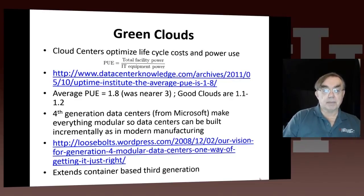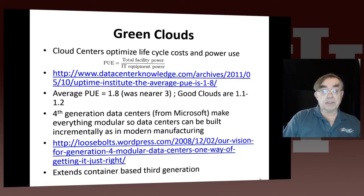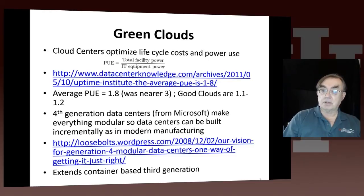Here's some comment on greenness. There is an important metric called the PUE — total facility power over IT equipment power. If it were one, all your power would go into computing and storing data. But if the PUE was 1.8, which was the average a couple of years ago, then 40% of power is wasted. Clouds are much more efficient — they only waste about 10 to 20% of power, with a PUE between 1.1 and 1.2. Clouds have pioneered the fact that data centers can be made much more efficiently.